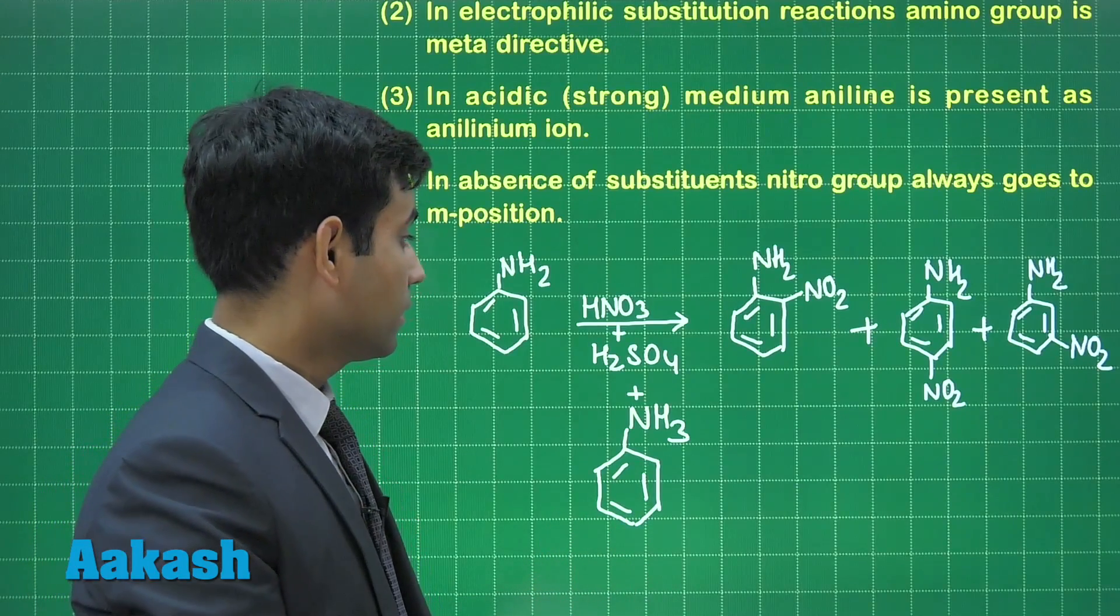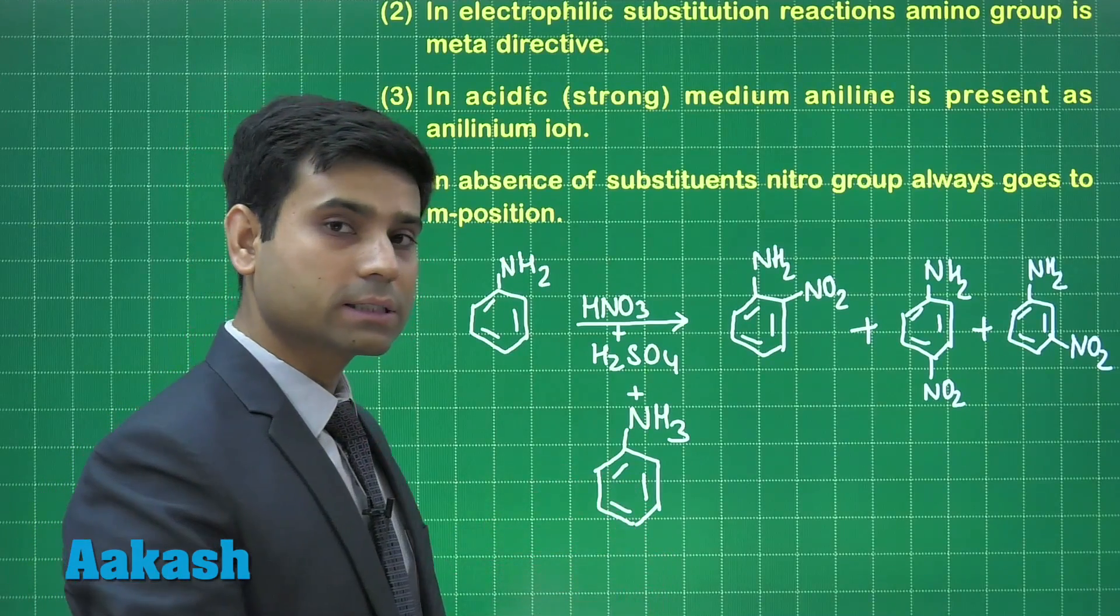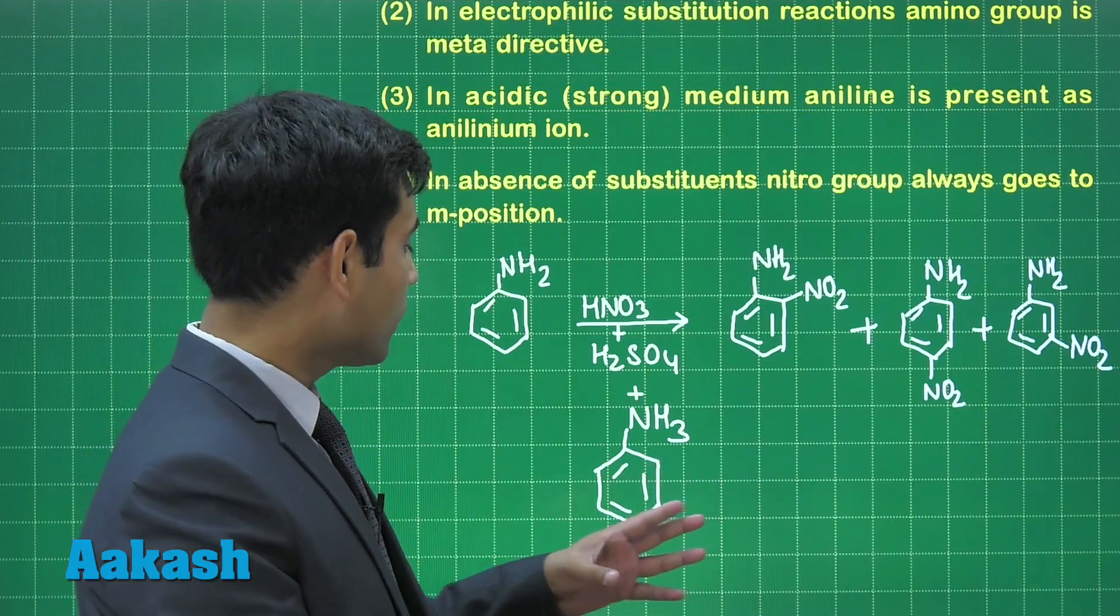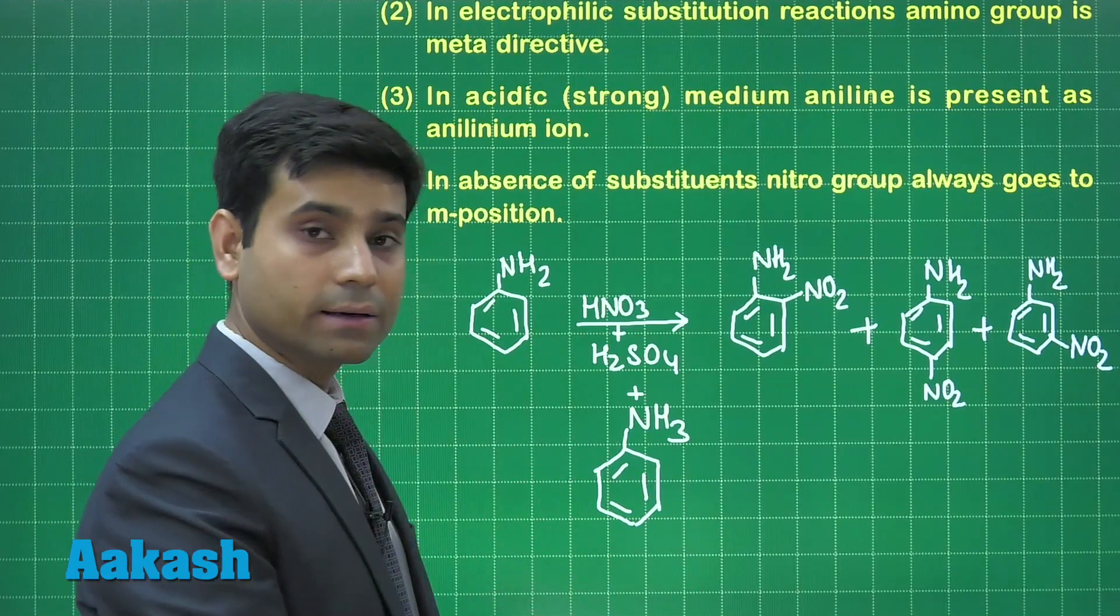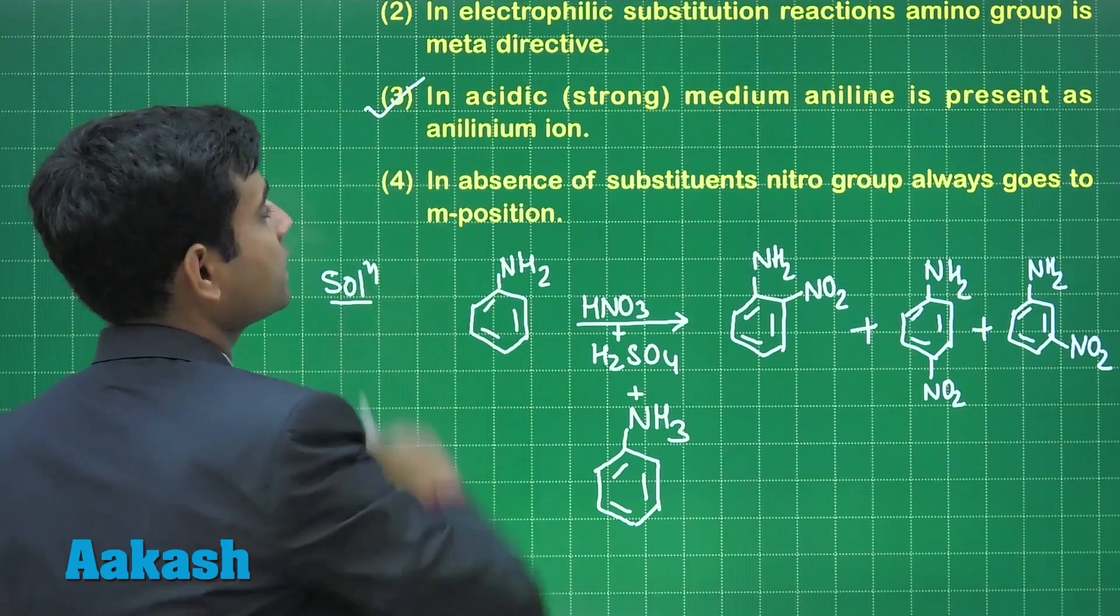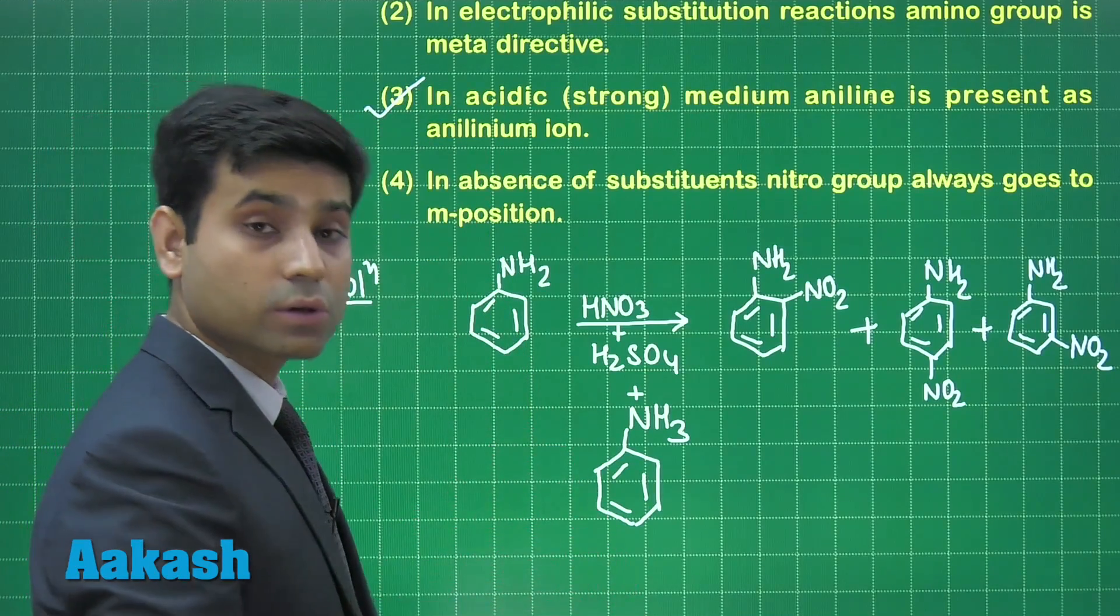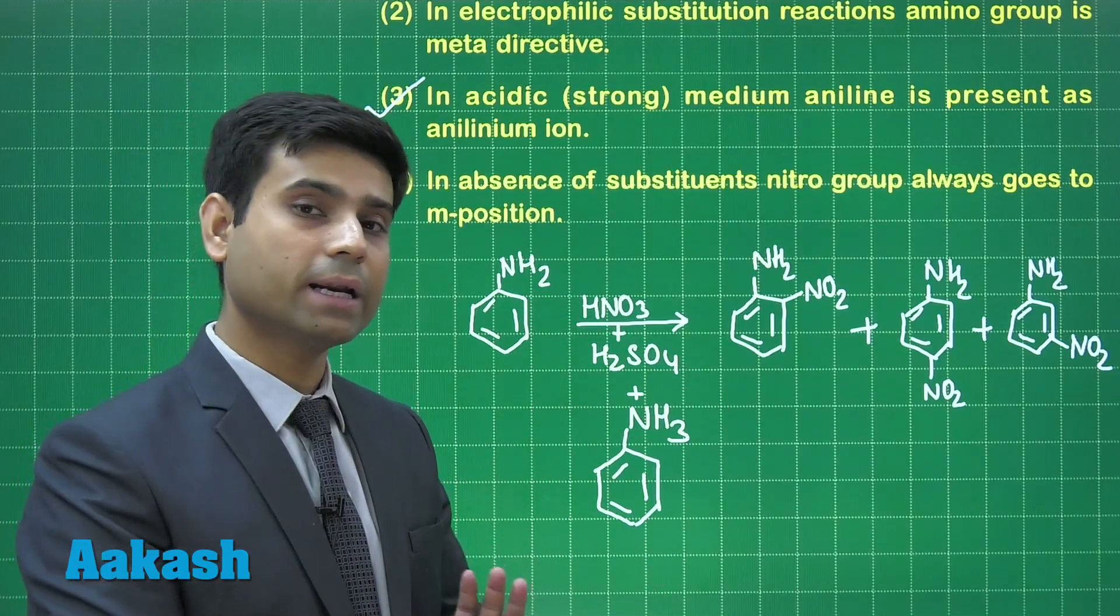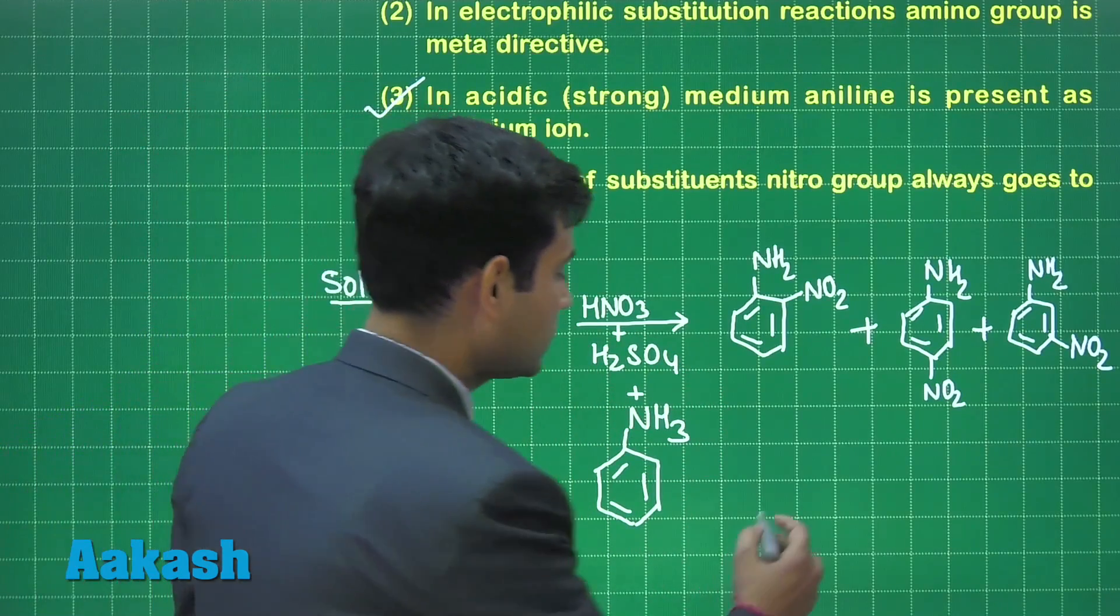That's why we get all three products, that is ortho, para as well as meta. Meta is formed by this anilinium ion. So the correct answer for this question is option 3, that is in acidic medium which is strongly acidic, aniline is present as anilinium ion which is meta directing in nature. So answer is option 3.